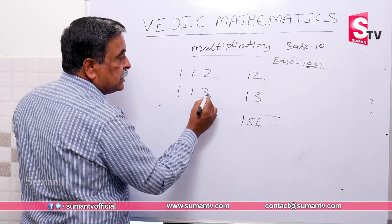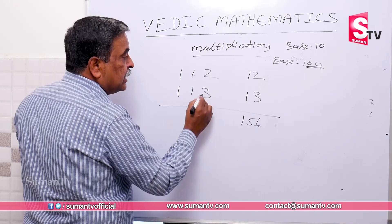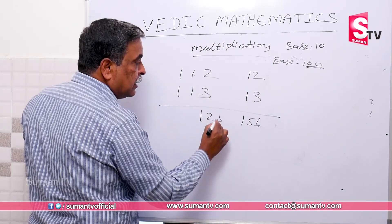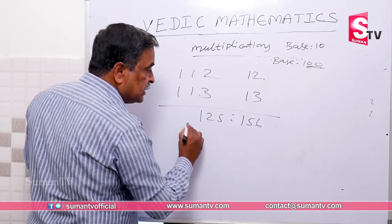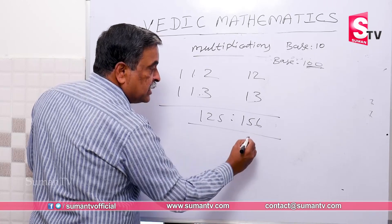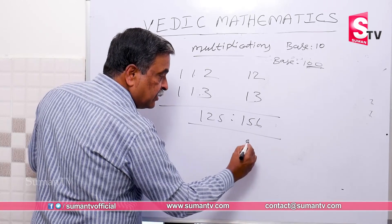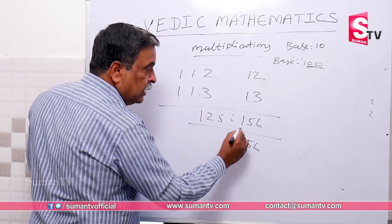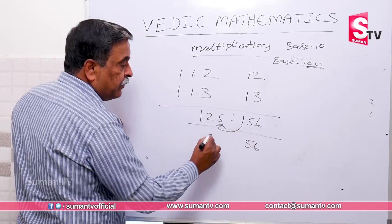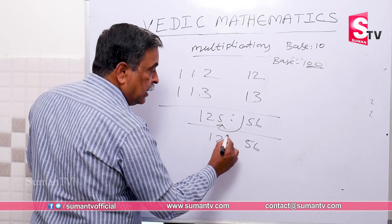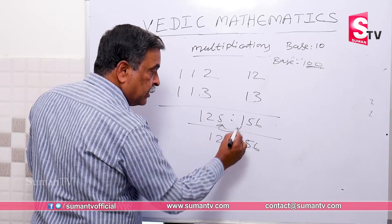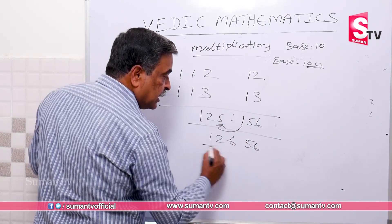12 plus 13, 13 plus 12 is 125. So the balancing is done — units plus 1, 10 plus cover is 5, 6 — 1 is done. 125 plus 1, 126 is done.